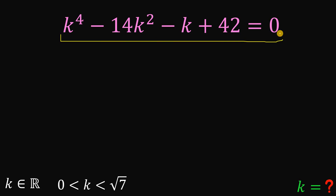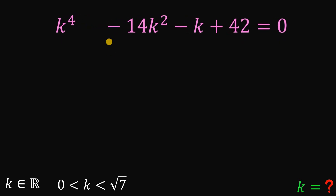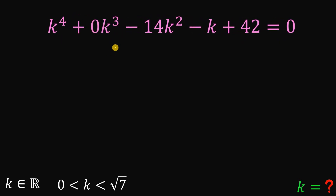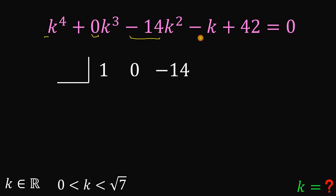How do we find the value of k given this quartic equation, where the highest power of k is 4? We're going to use continuous synthetic division. To use synthetic division, we need the coefficient of k cubed, so let's insert k cubed with coefficient 0. Now, rewrite the coefficients: k to the fourth is 1, k cubed is 0, k squared is negative 14, k is negative 1, and the constant is 42. We will apply the rational root theorem, so we need the factors of positive 42.